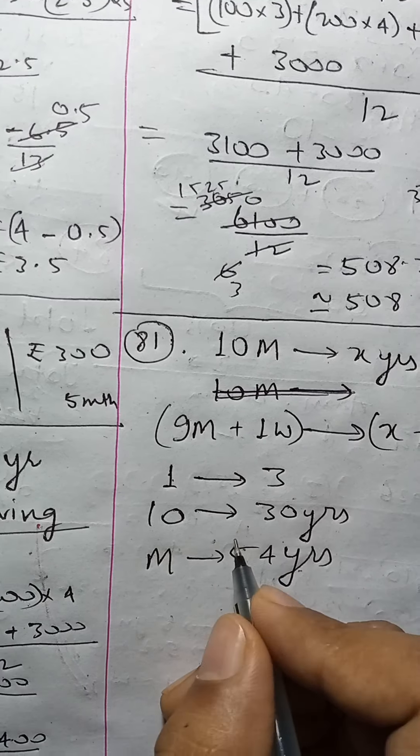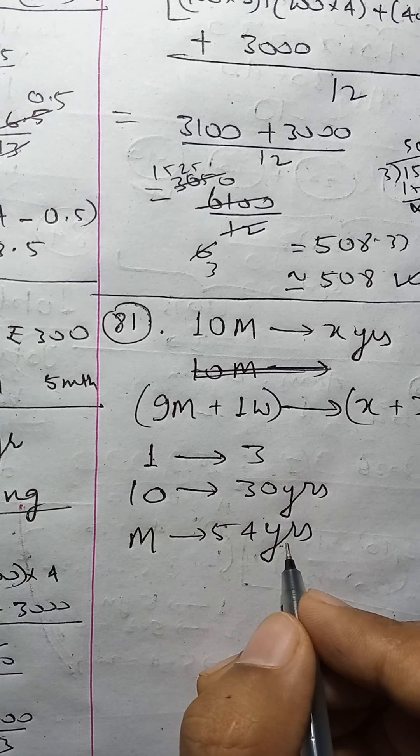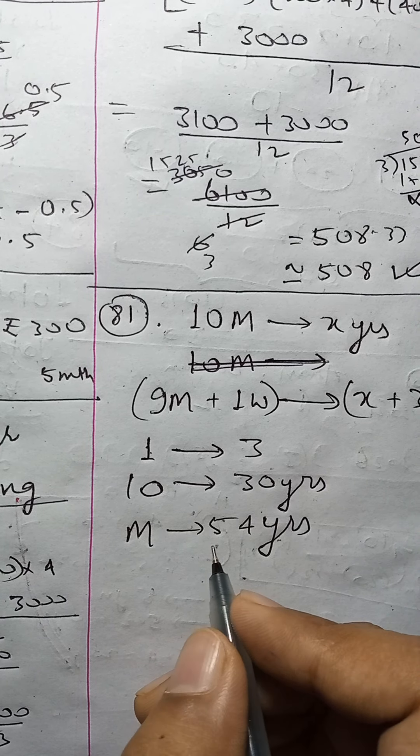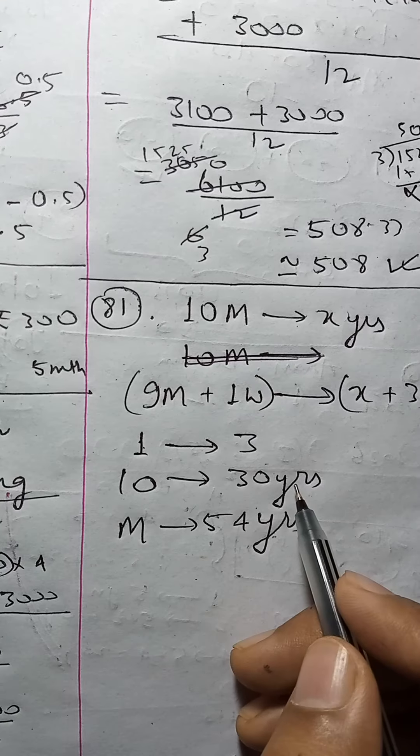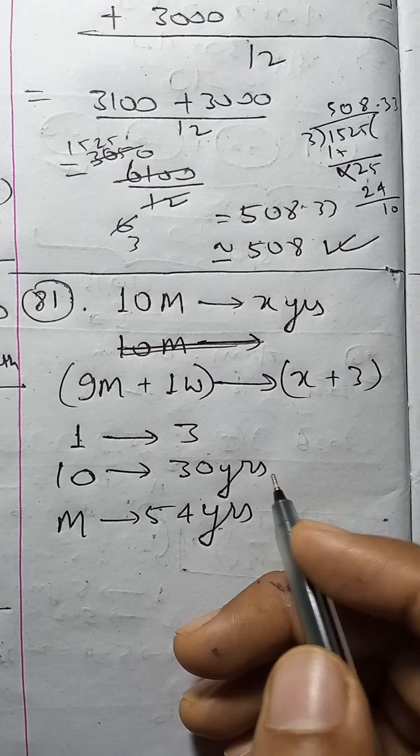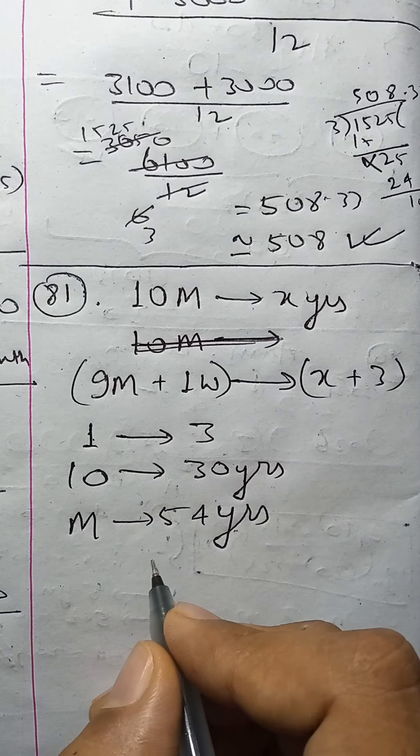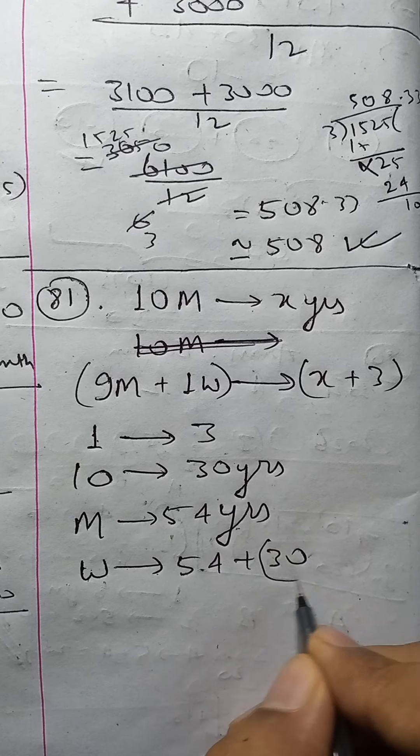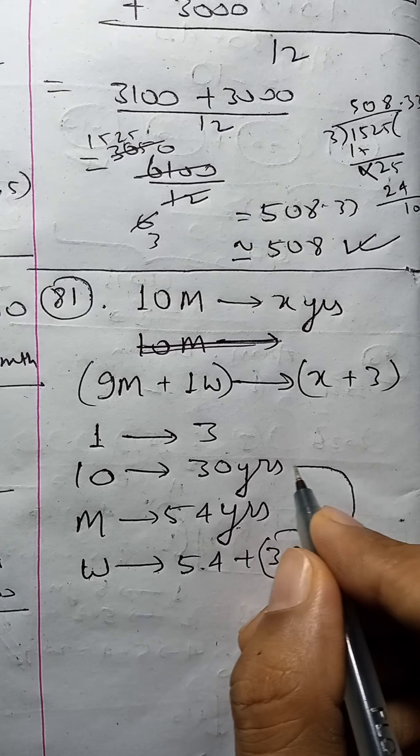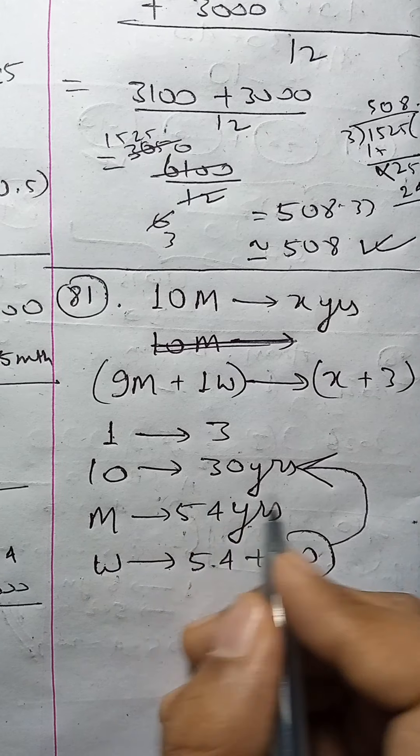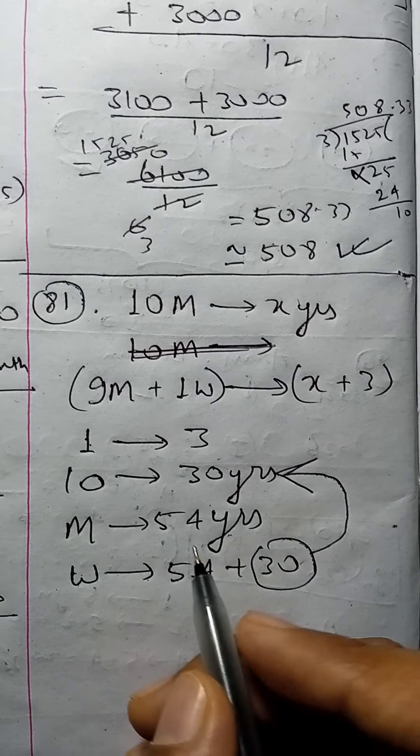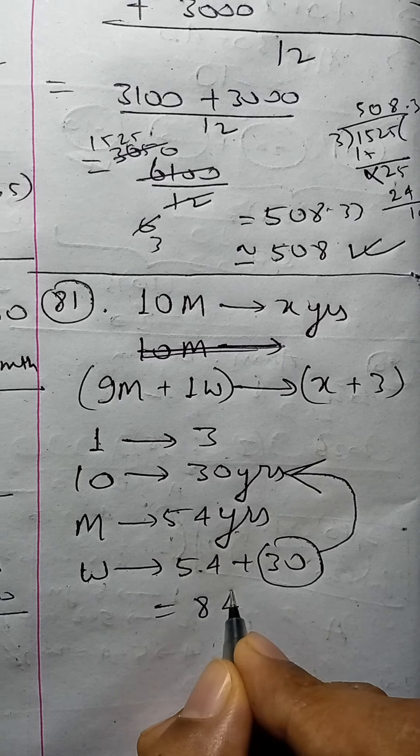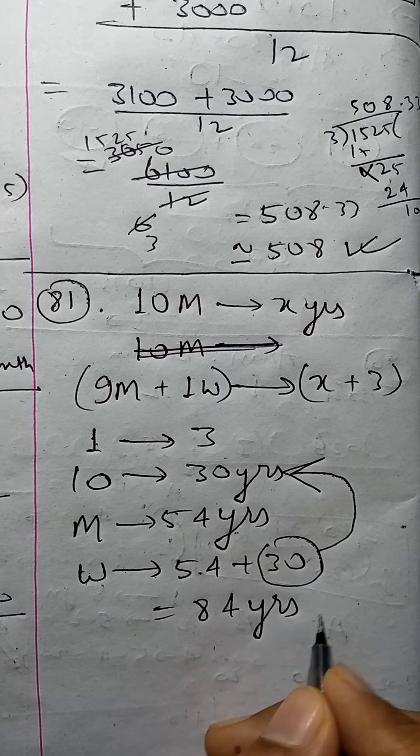So the 54-year-old person left and the woman came in. The woman's age will be 54 plus 30, which equals 84 years, because the total average increased by 30 years overall.